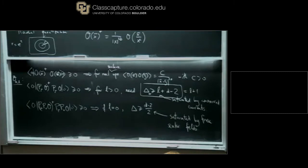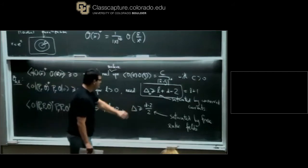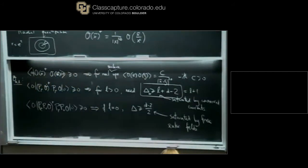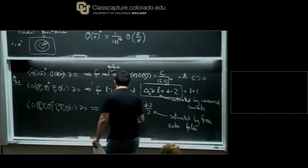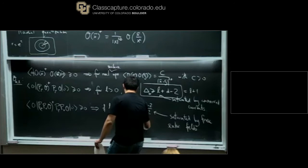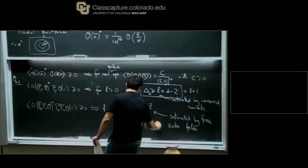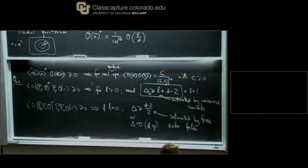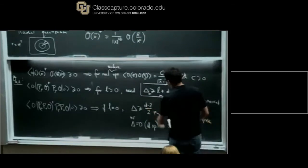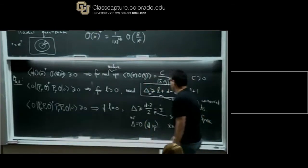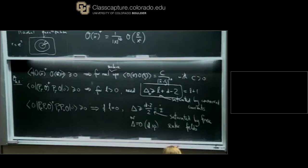The similar bound holds for operators with spin. Assuming operator O has scaling dimension delta and spin L, this condition implies delta is bigger than L plus D minus two. Looking at the condition with two P's acting on O, we get a condition for L equals zero: delta is bigger than (D minus 2) over 2, or delta equals zero (corresponding to the identity operator). All other scalar primaries must obey this, and this bound is saturated by free scalar fields. Plugging in D equals 3, we get delta is at least one half; if delta equals one half, we have a free scalar field.